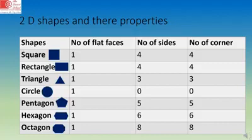Circle has one flat face. Circle does not have any sides or any corners. Pentagon has one flat face, five sides and five corners. Hexagon has one flat face, six sides and six corners. Octagon has one flat face, eight sides and eight corners.